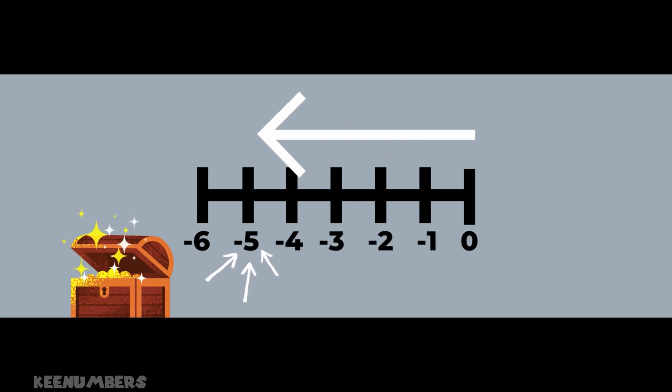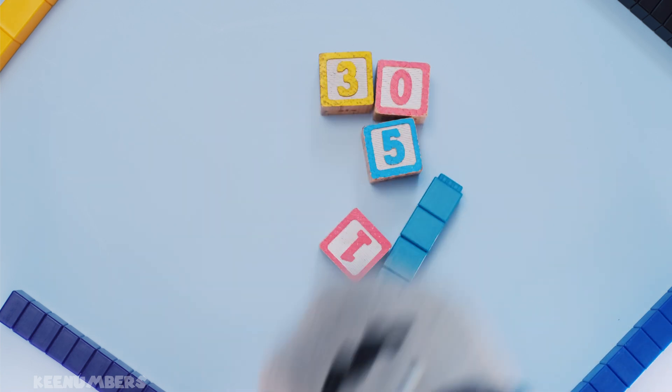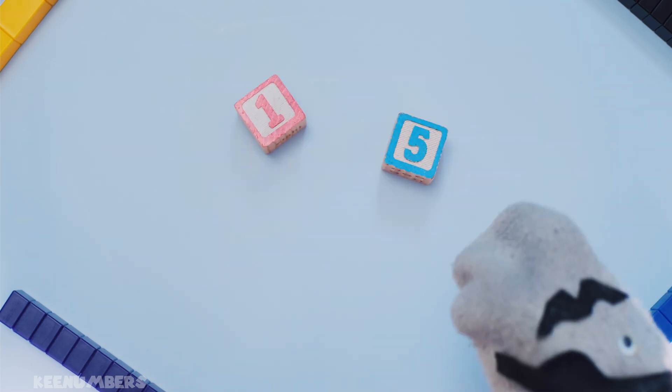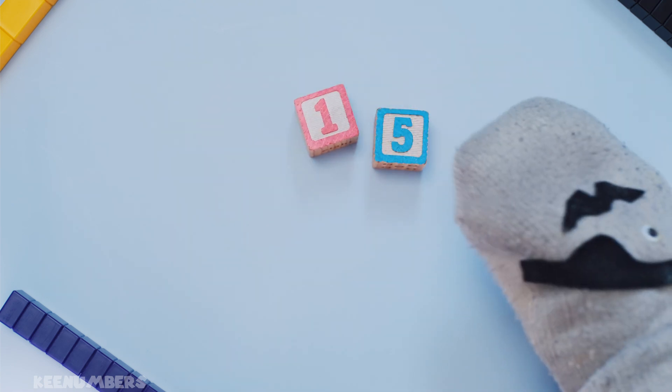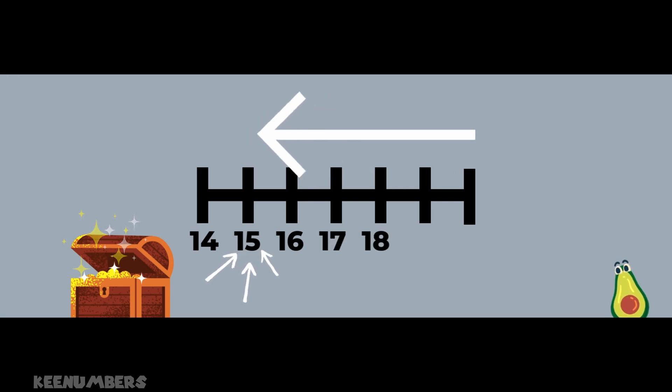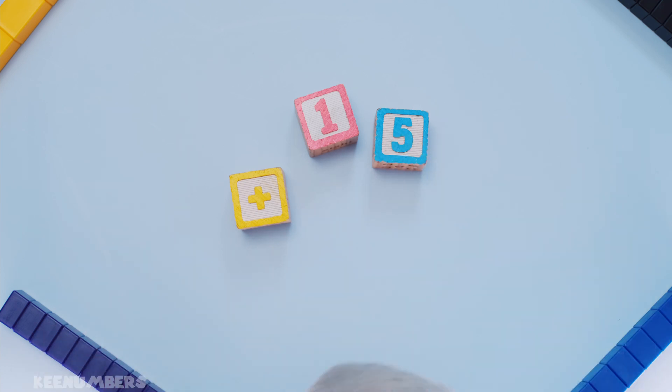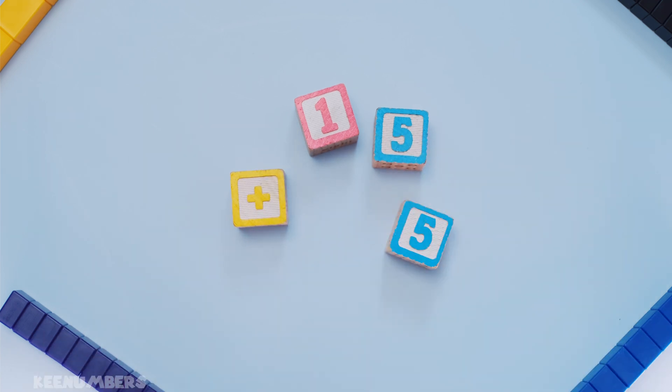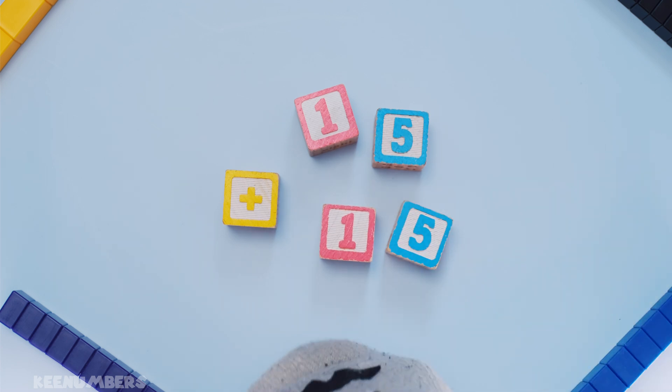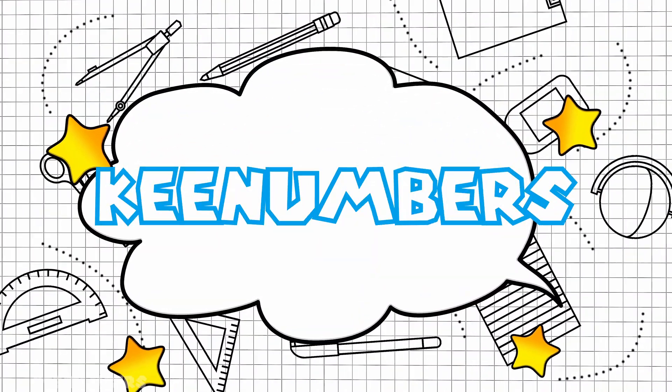But don't forget, you have 0 minus 5. Hmm, look at the number line. 0 minus 5. You start at 0 and you go backwards 5 spaces. That's negative 5. So you have 20 minus 5. But if you start at 20 and you go backwards 5 spaces, that's 19, 18, 17, 16, 15. Arr. So you just have 15. That's what 30 minus 15 is. It's 15. And you can check your work. 15 plus 15. Arr, that's 30.